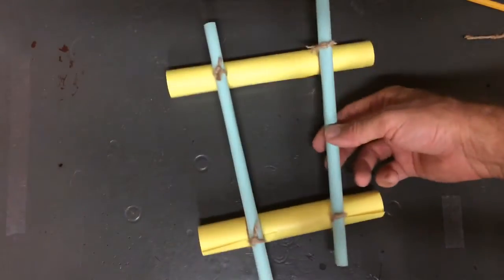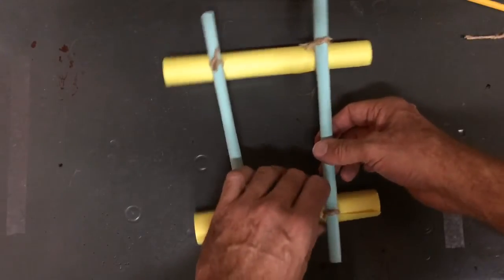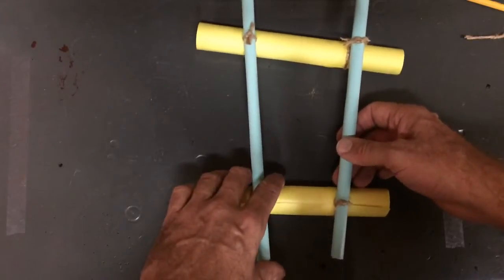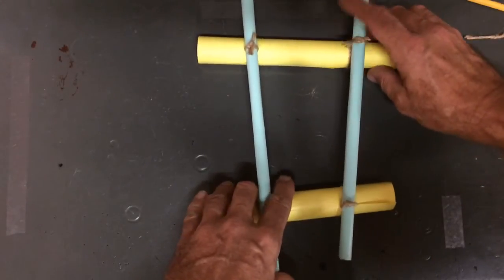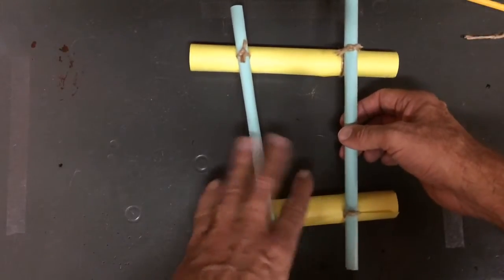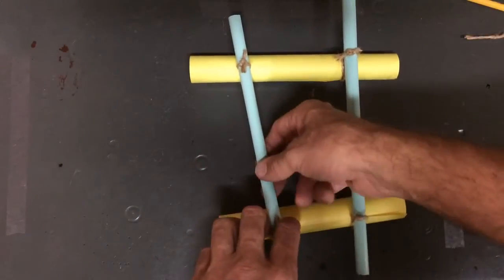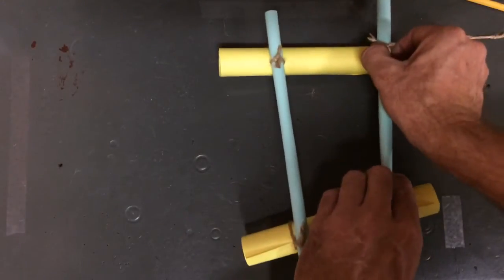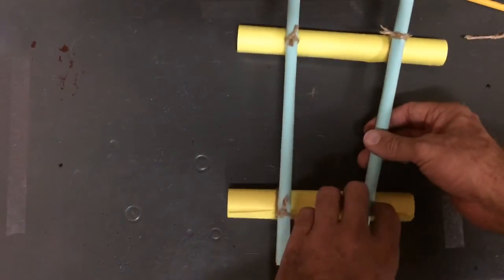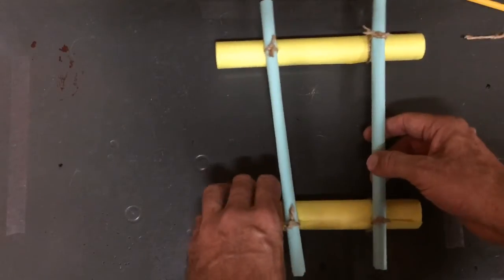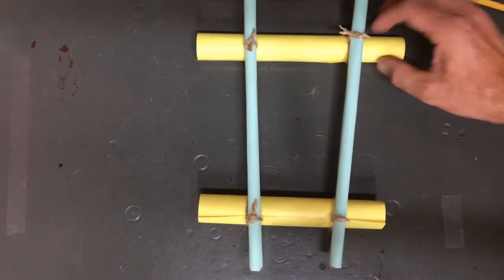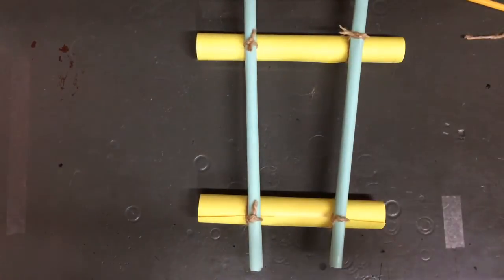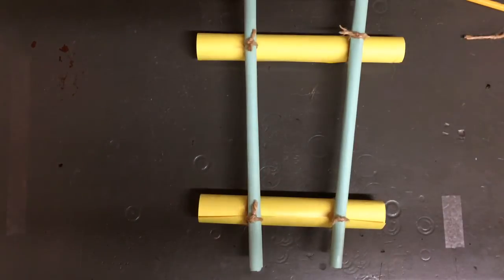So now what I'm going to do is I'm going to flip this upside down. I'm going to arrange everything perfectly the way I want it to lie on the paper. I'm just going to adjust this a little bit. I want it to look nice, too. So I want the tubes to be parallel to one another.